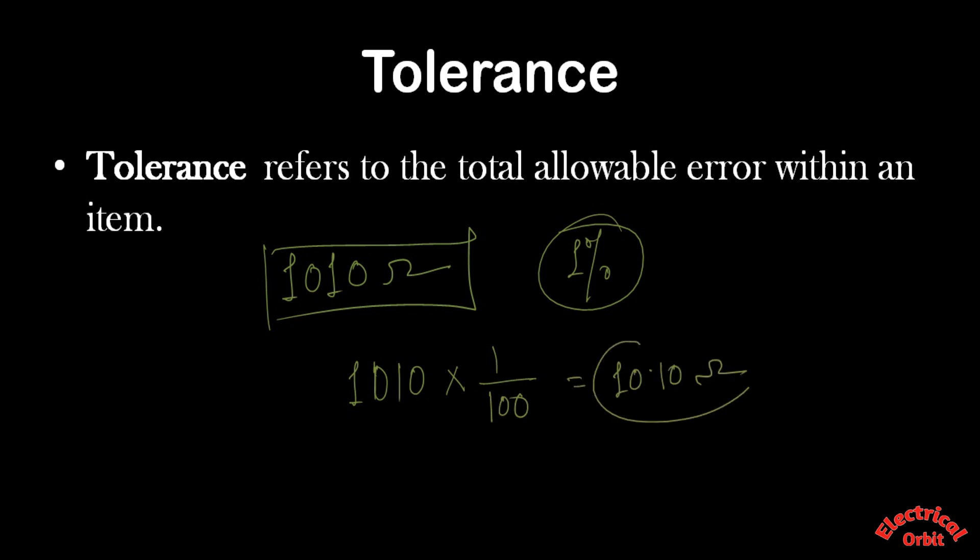So the resistance we have measured using this same ohm meter may be either this ohm or this ohm. This is the range by which the variation is occurring.